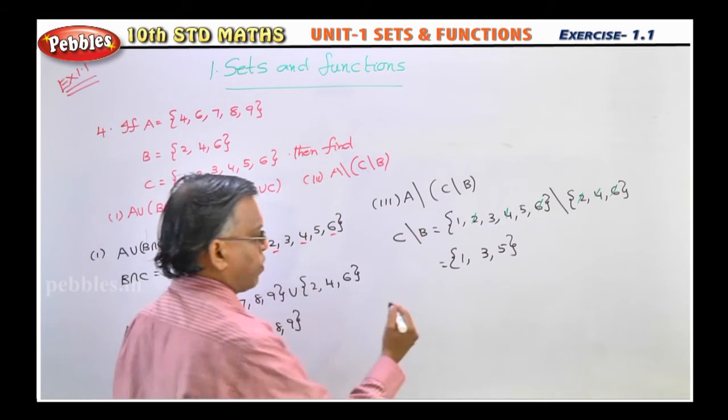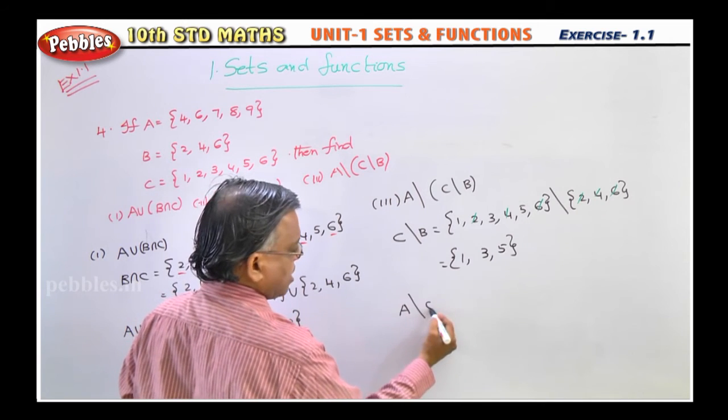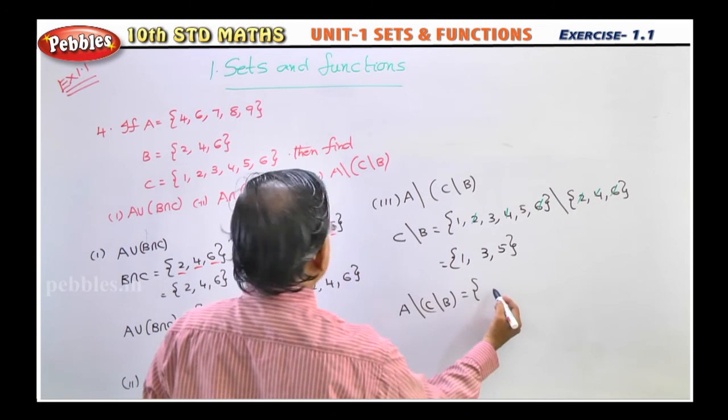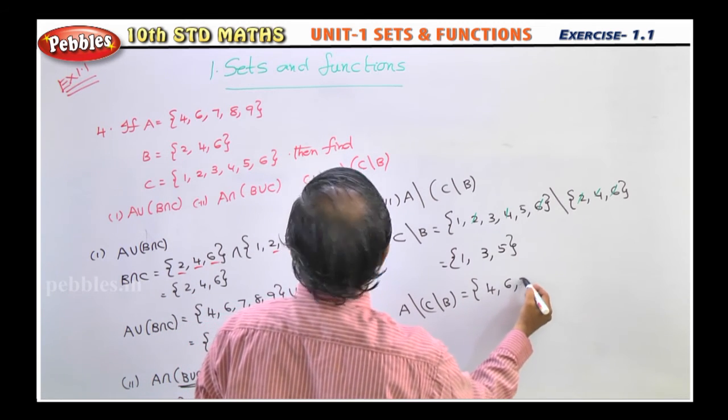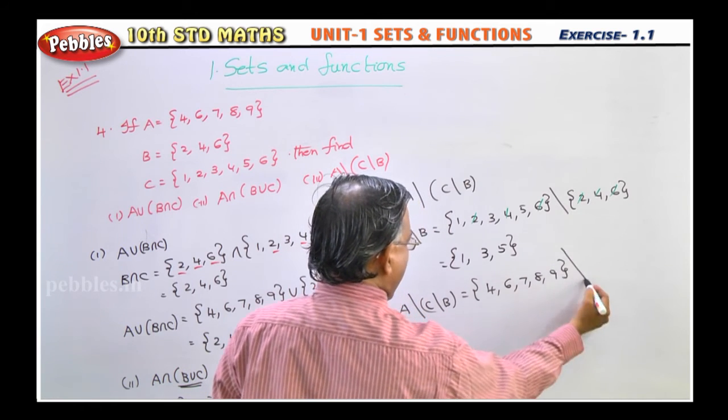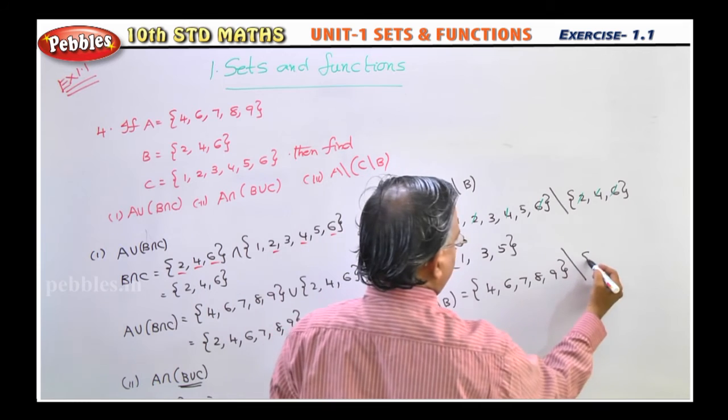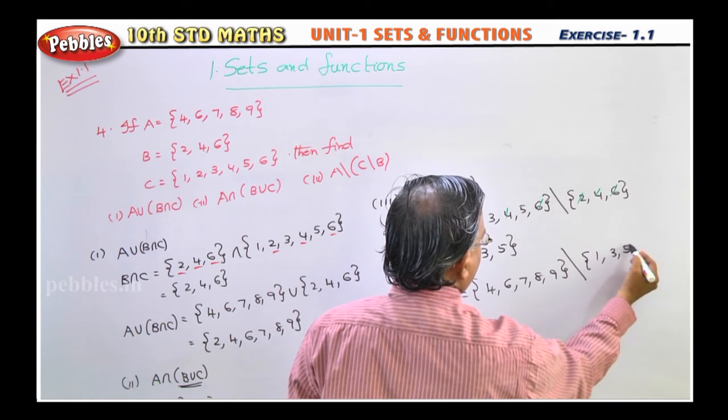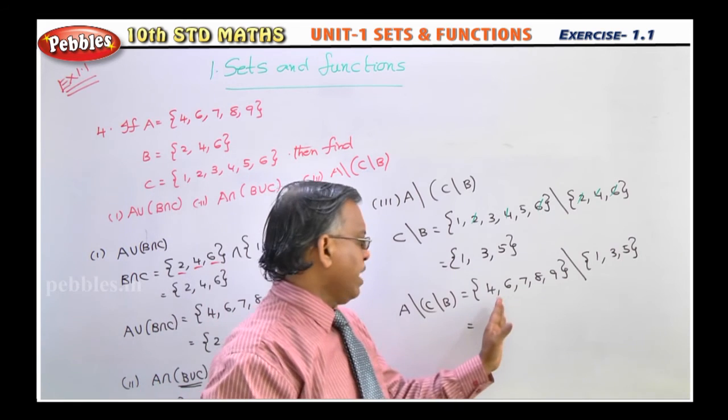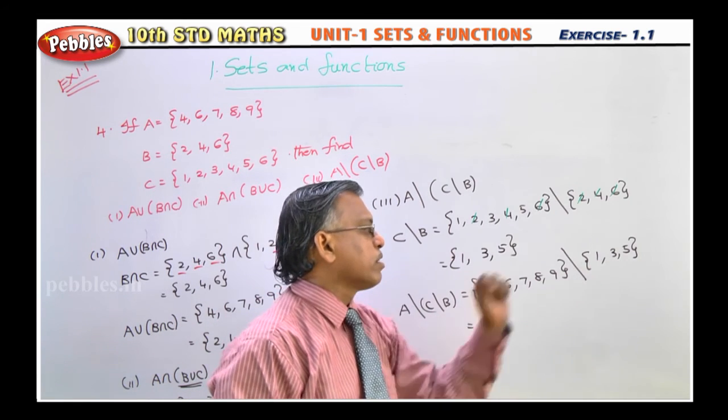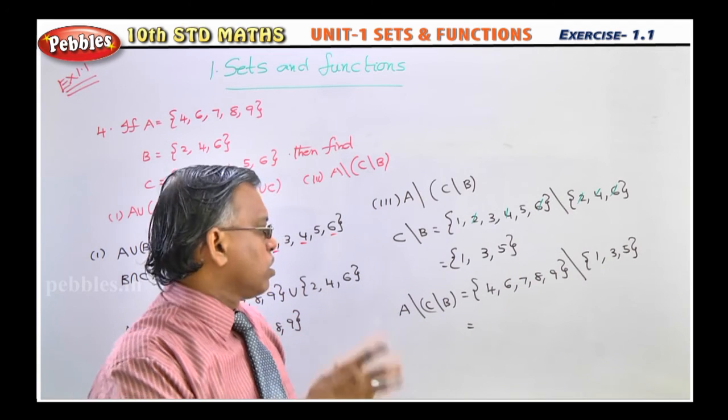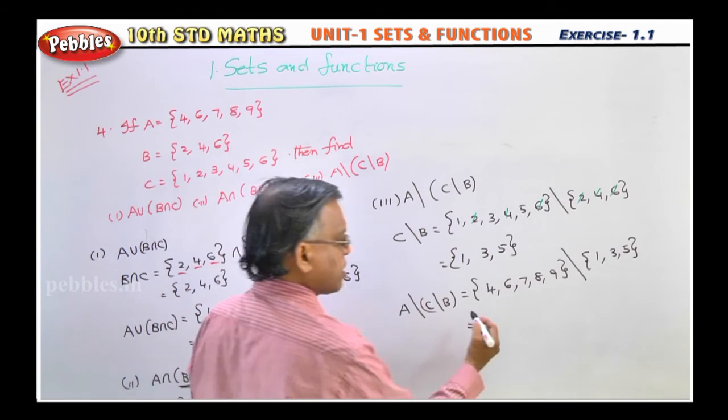Next, you find full sum. That is A slash C slash B. So now, first you write on A set: 4, 6, 7, 8, 9. Next, slash. C slash B, we already found that: 1, 3, 5. You substitute that. So now, similarly here also, all the elements are present in A but not in B because there is nothing common in both these sets. So that means what? The elements which are present in A is the answer itself.